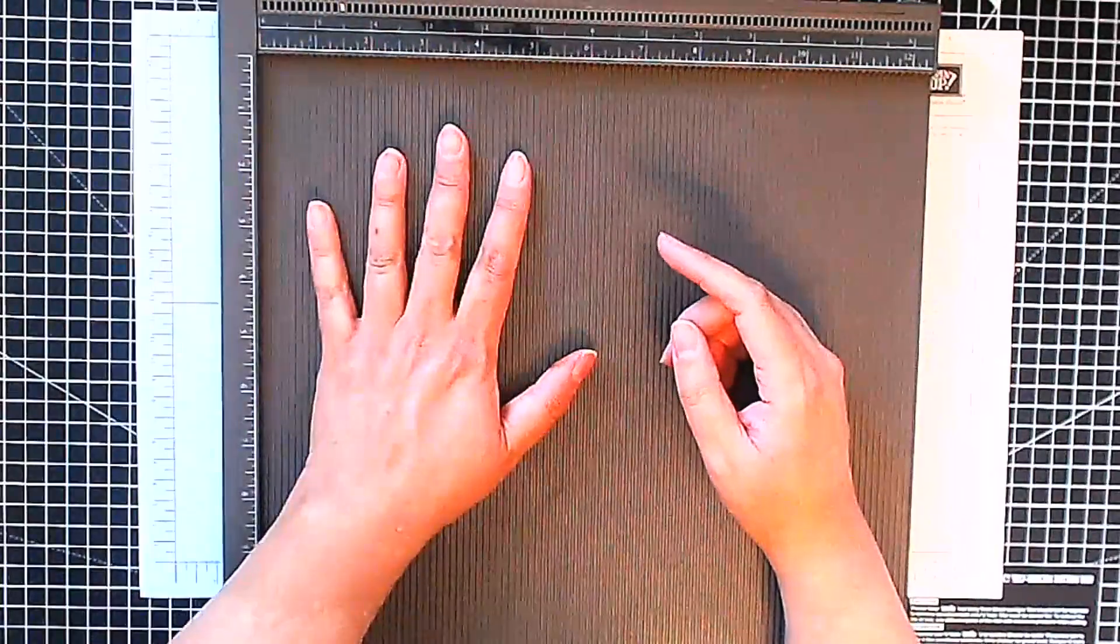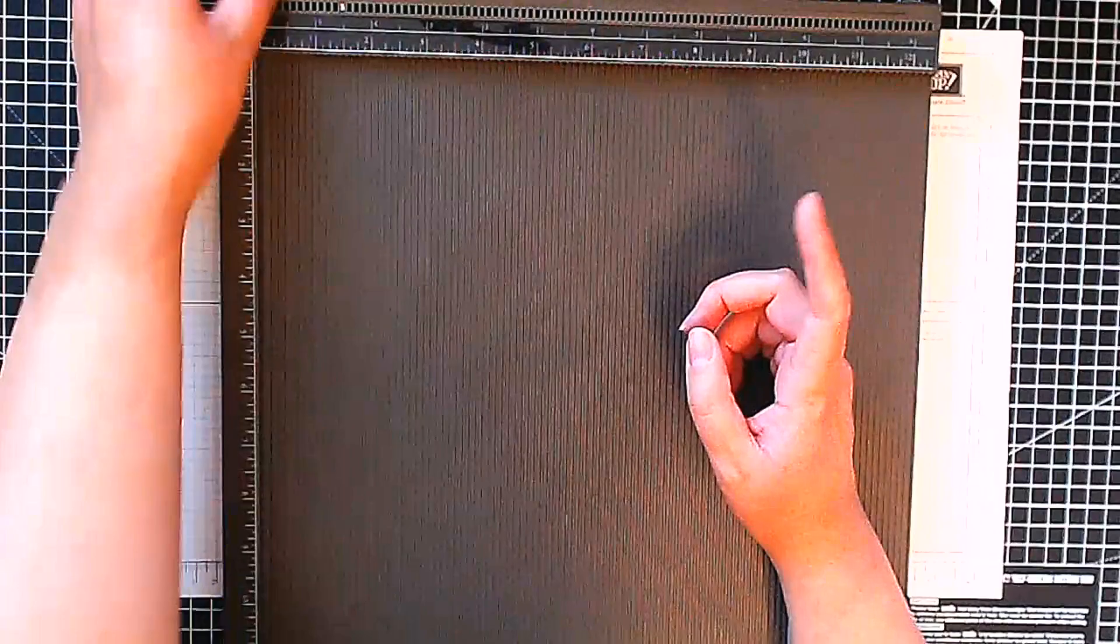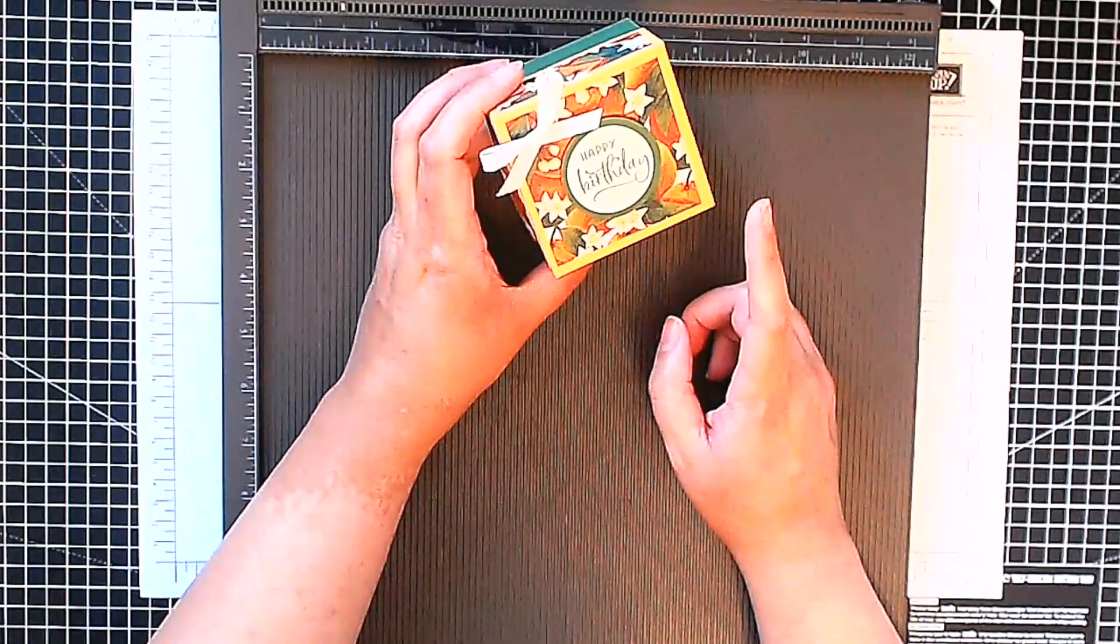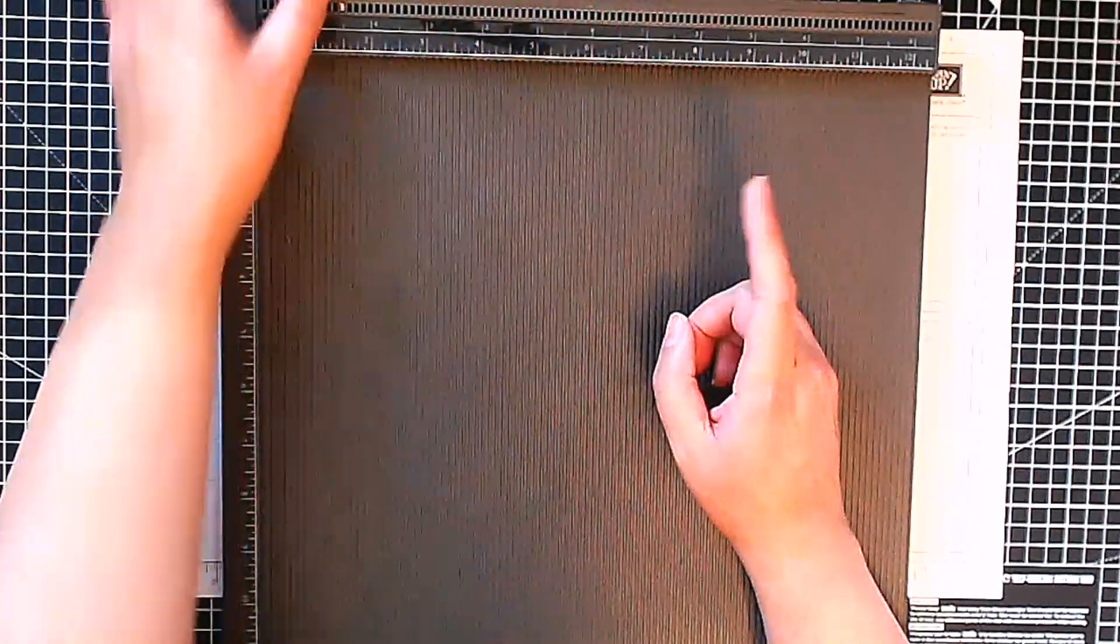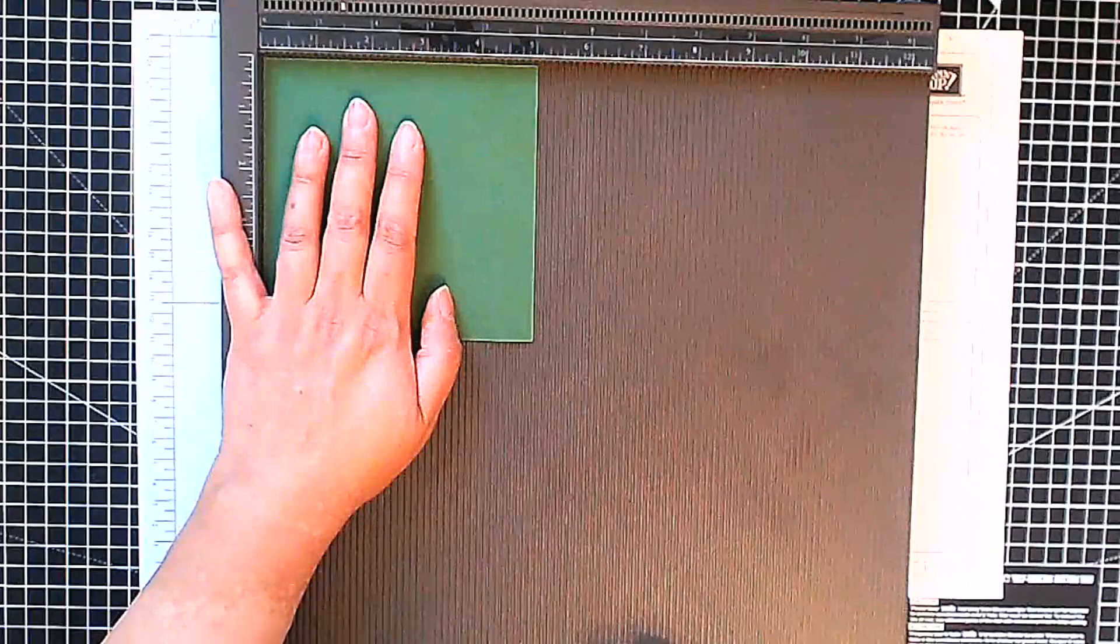So this one here uses Garden Green and Peach Pie using the same paper. This paper is Mediterranean Blooms, absolutely gorgeous paper in the new catalog. So I'm going to start off with my lid. My lid here measures five and one sixteenth by five and one sixteenth and we're going to score at one and two inch on all sides.